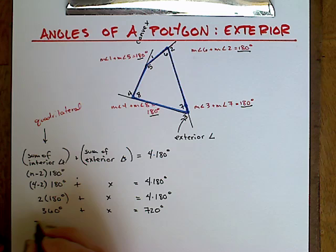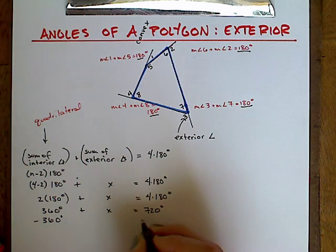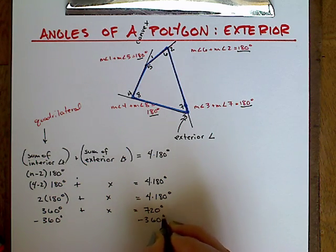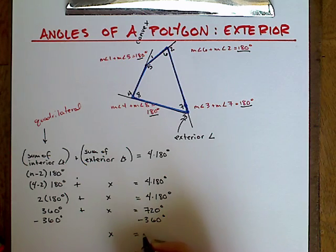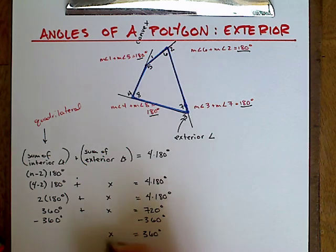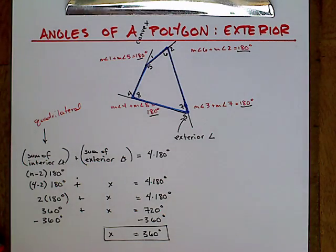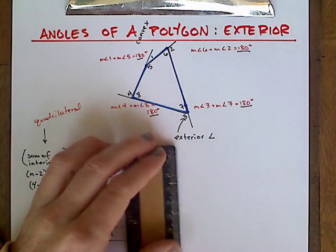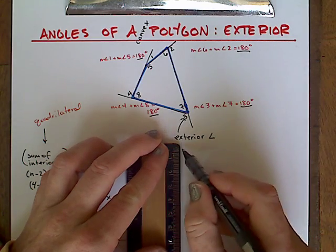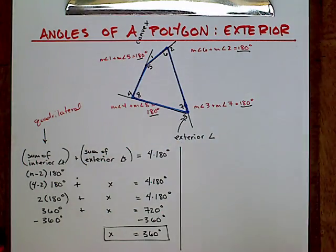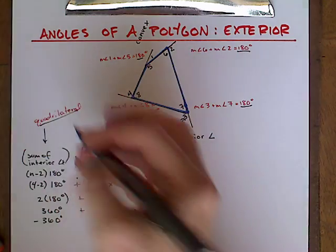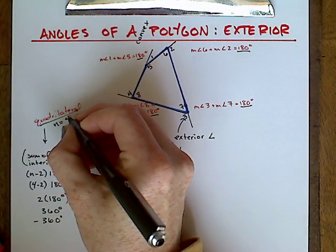Now the next question is going to be, after we evaluate this, we find out that the sum of the exterior angle measurements of a quadrilateral is 360 degrees. How does this relate to any polygon out there? Is this only true for quadrilaterals? Is there some kind of pattern like the interior angle measurements? Is there an equation that we could use to find the sum of the exterior angles?